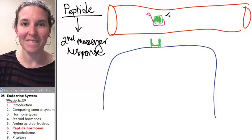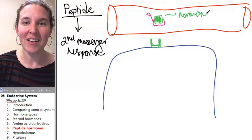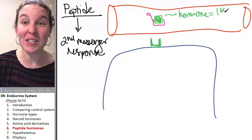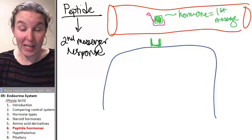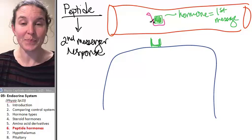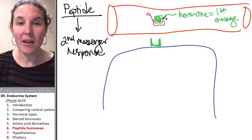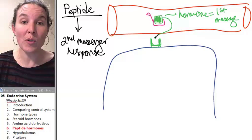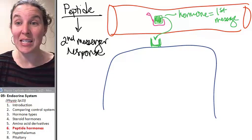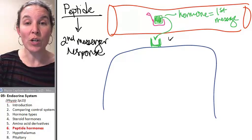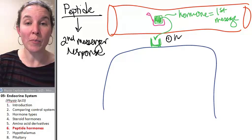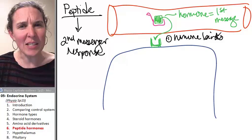First of all, your hormone is your first message. So what does this tell you right here? Somewhere along the line, we're going to get a second message. And here's how that works. So first of all, the hormone binds to the receptor. The receptor is embedded in the cell membrane. So first, hormone binds. And it binds to the receptor.